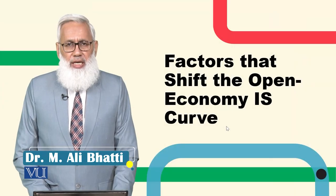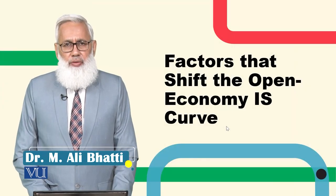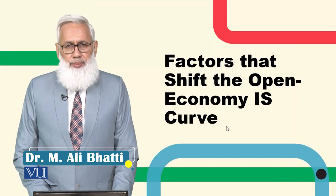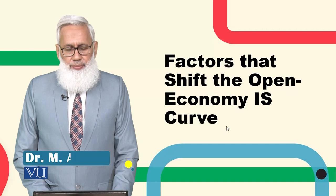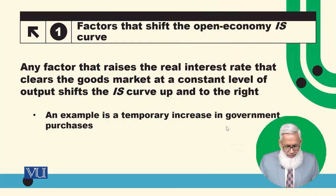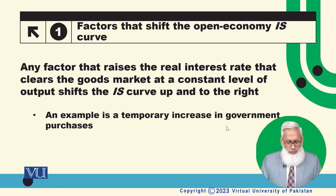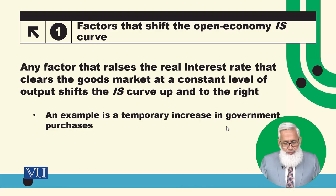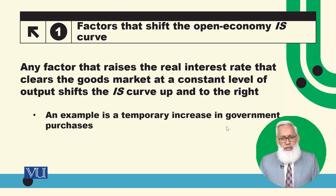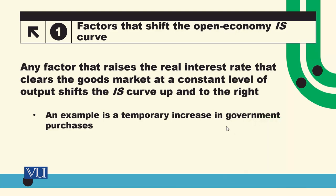Factors that shift the IS curve in the open economy. Any factor that raises the real interest rate that clears the goods market at a constant level of output shifts the IS curve up and to the right.